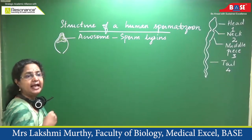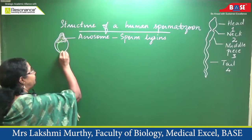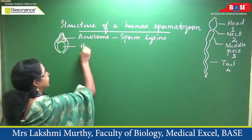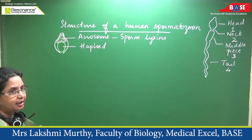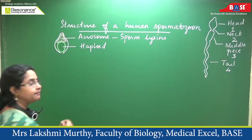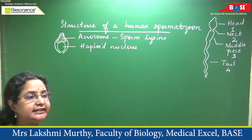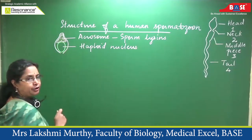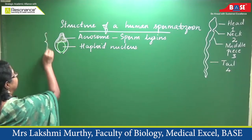Behind the acrosome is a flat, ovoid haploid nucleus — the haploid male nucleus containing the paternal set of 23 chromosomes. Not all sperms contain X; some contain Y. The DNA is present in a condensed state inside the nucleus, positioned just behind the acrosome so it can be easily transferred into the egg during fertilization.